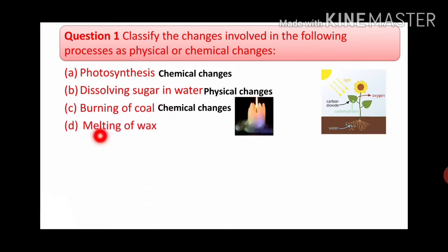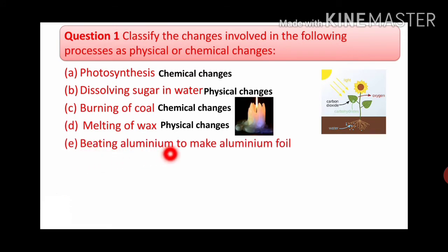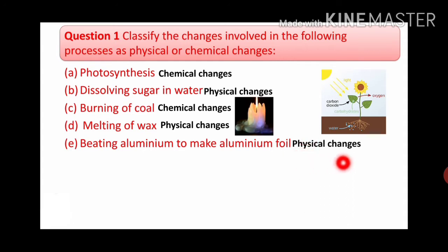Next one is melting of wax. This is the diagram of melting of wax. If wax melts once, we can obtain it back - we can heat it again and give it another shape. That's why it is just a physical change. Next one is beating aluminium to make aluminium foil. We are just changing its shape, so we can say it is a physical change.